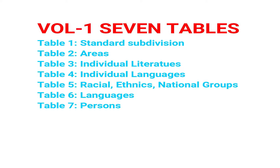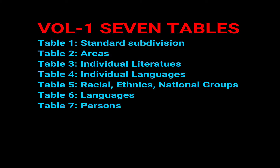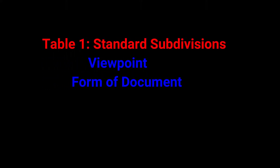In Volume 7, tables are given — these are called auxiliary tables, which are used to support the schedules. I will show an example of how to use these tables. Table 1 is standard subdivisions, where the viewpoint of presentation of a subject or form of document is written.